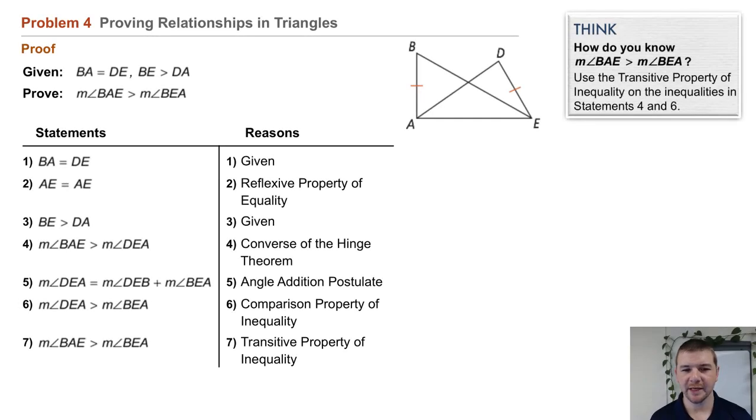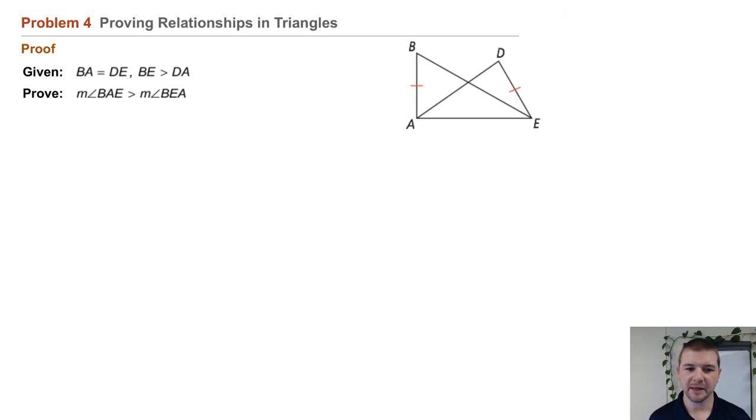Problem 4: Proving relationships in triangles. It's a proof problem given the diagram at the right and that BA equals DE and that BE is greater than DA.